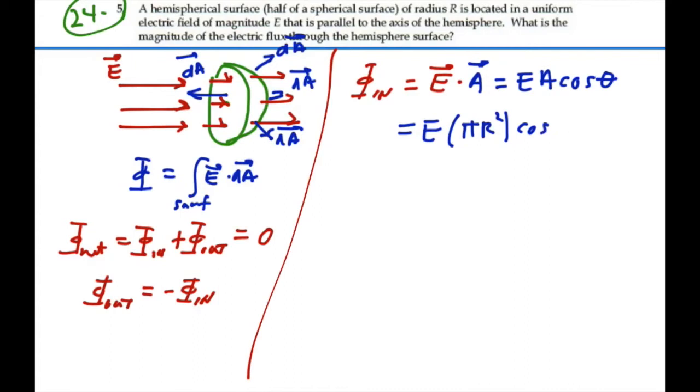Now the electric field is going to the right, the area vector is going to the left, so the angle we're talking about here is 180 degrees. Cosine of 180 is negative one, so this influx is going to be negative E pi R squared.